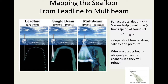The depth is one half the round trip travel time times the speed of sound. The speed of sound depends on temperature, salinity, and pressure. Where acoustic beams obliquely encounter changes in sound speed, they will refract. So we need to know how sound speed varies in the vertical and horizontal to correct for refraction — this is more of a problem with multi-beam surveying.